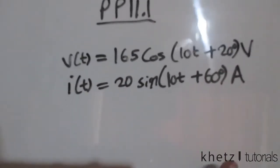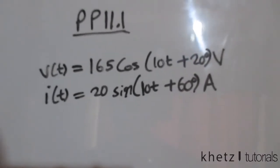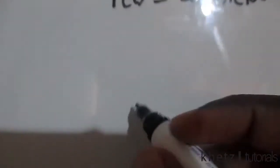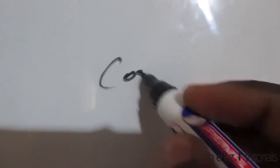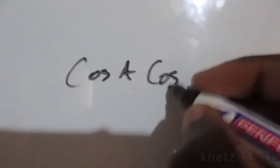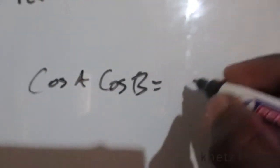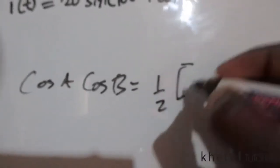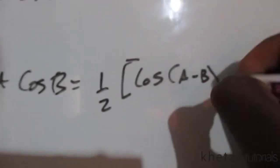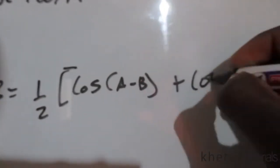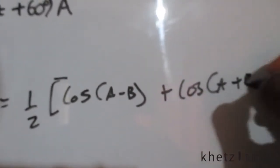So let's start by looking at a few things. If you have cosine of A multiplied by cosine B you should get half cosine (A - B) plus cosine (A + B).